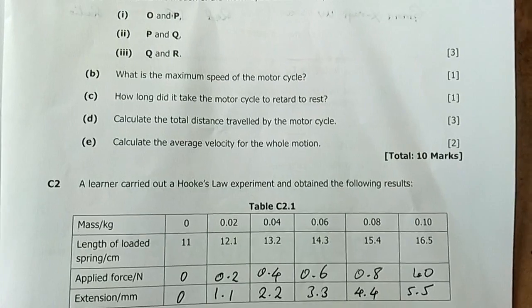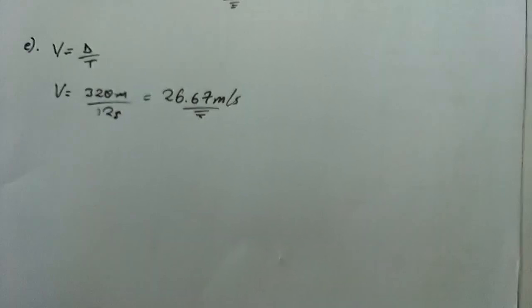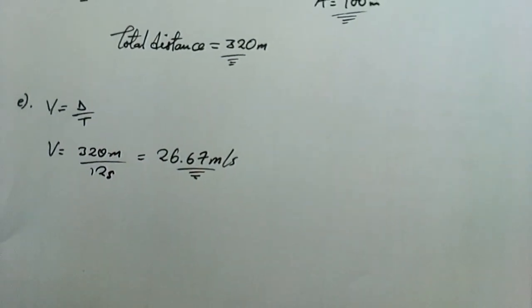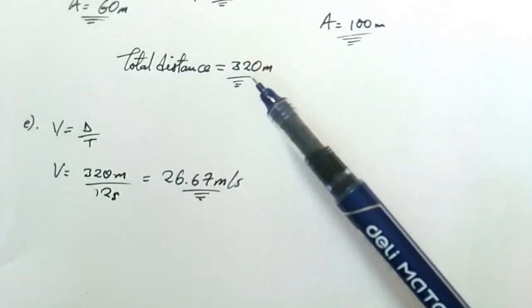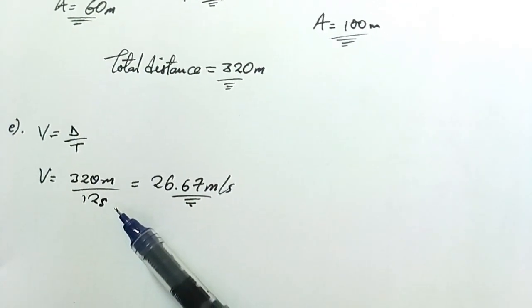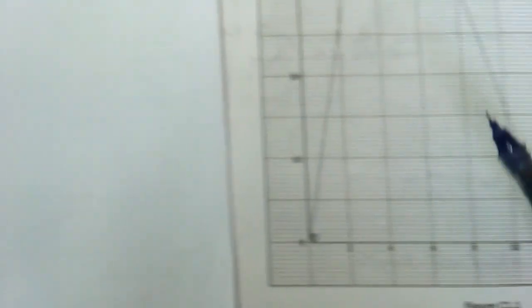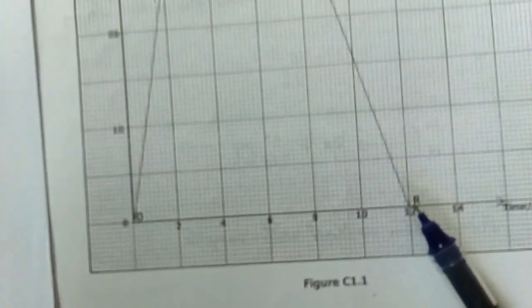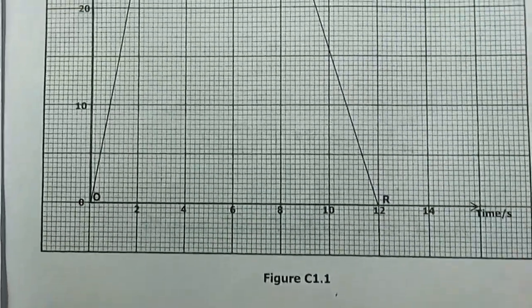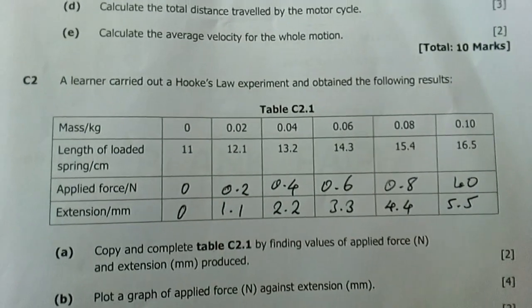The third question is: calculate the average velocity for the motion. My average velocity for the motion is 320, which is our total distance calculated, over 12 which is the total time taken by the motorcycle. It comes out as 26.67 meters per second.